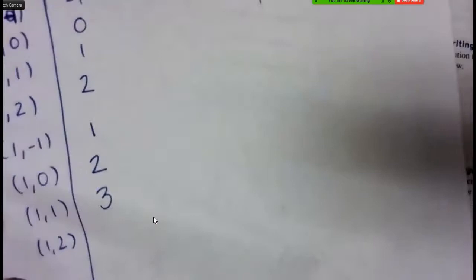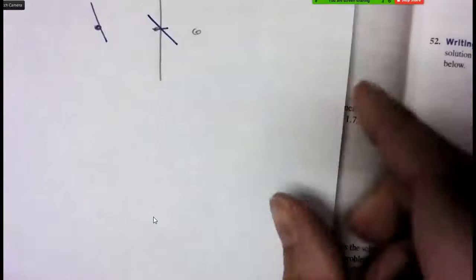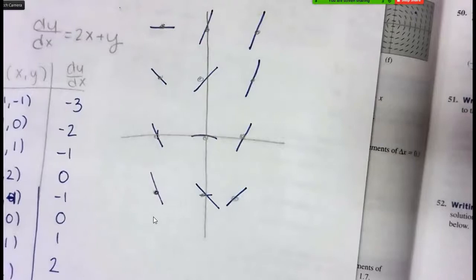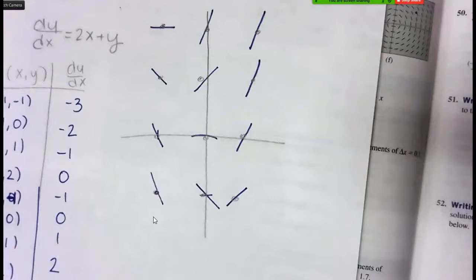And then you do it again with 1, negative 1. 1, 0. 1, 1. 1, 2. So 1, negative 1 is 2 minus 1, which is 1. 1, 0 is 2. 1, 1 is 3. And 1, 2 would be 4. So these are now all positive slopes. 1, 2. And they get steeper as you go.